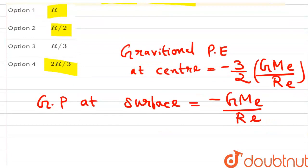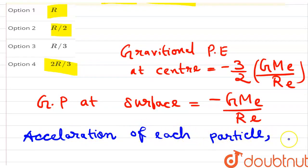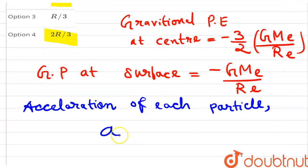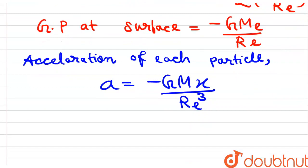Acceleration of this particle will be a equals minus GM times distance divided by radius of earth cube. This acceleration is independent.